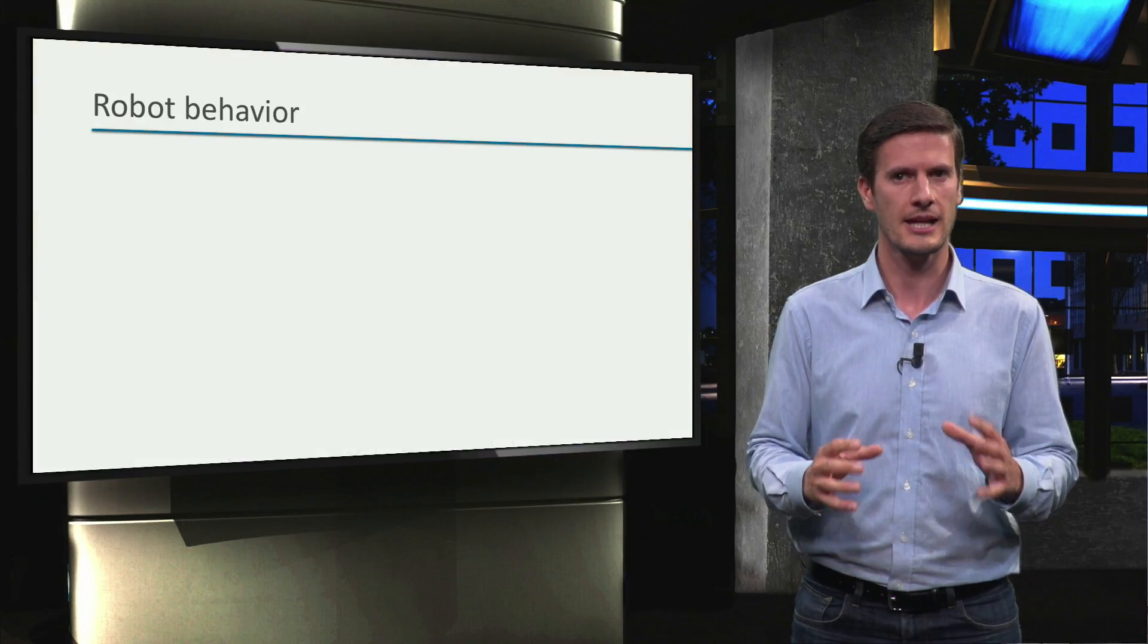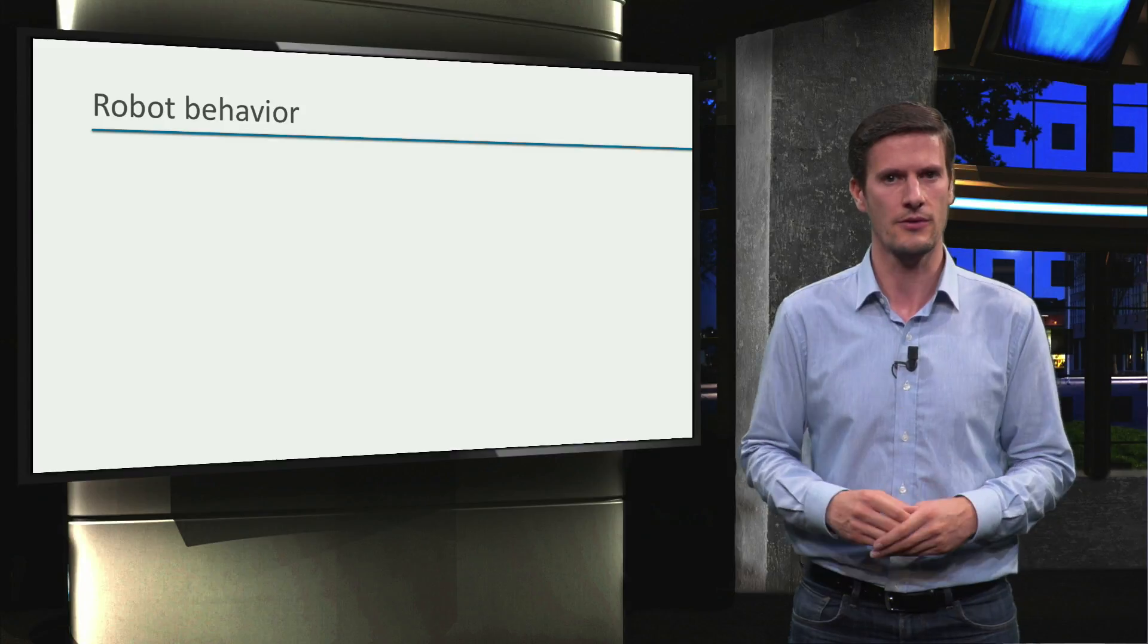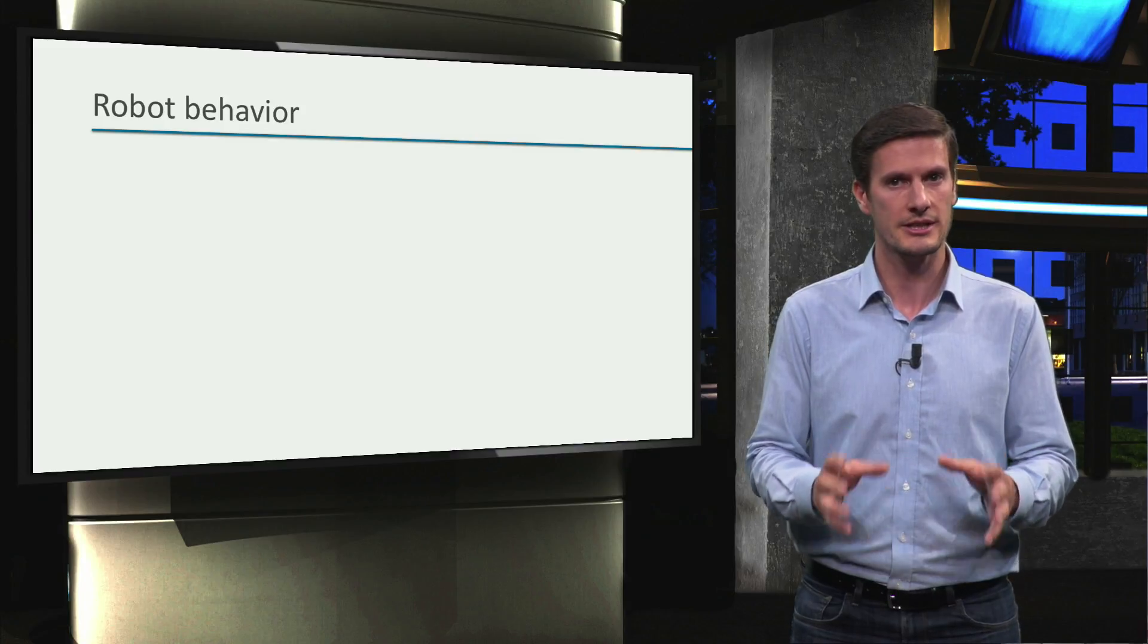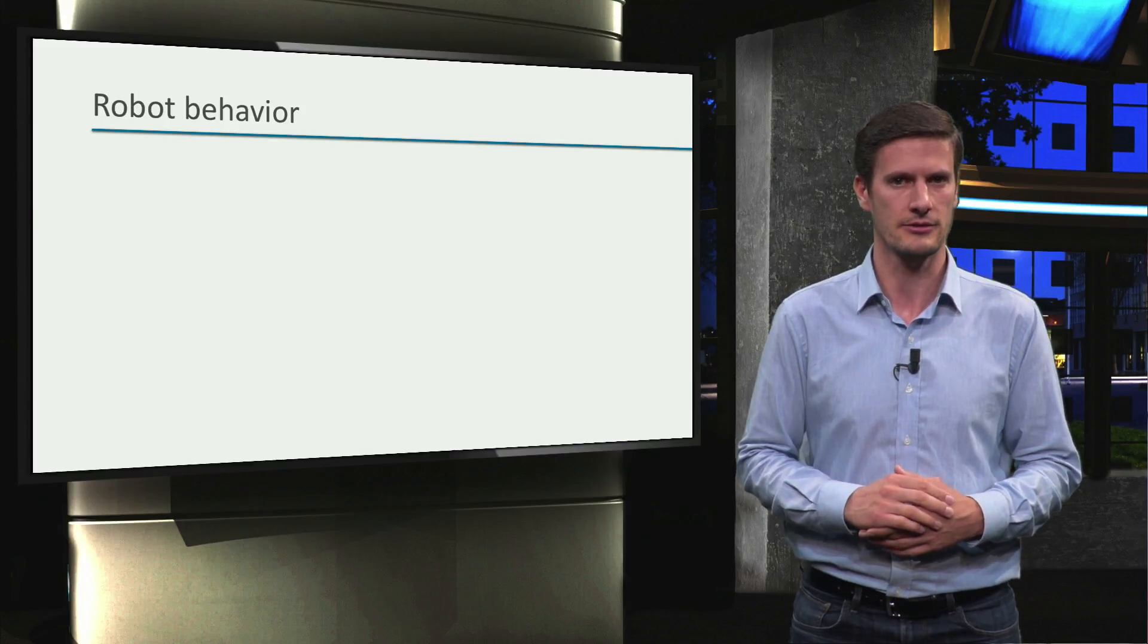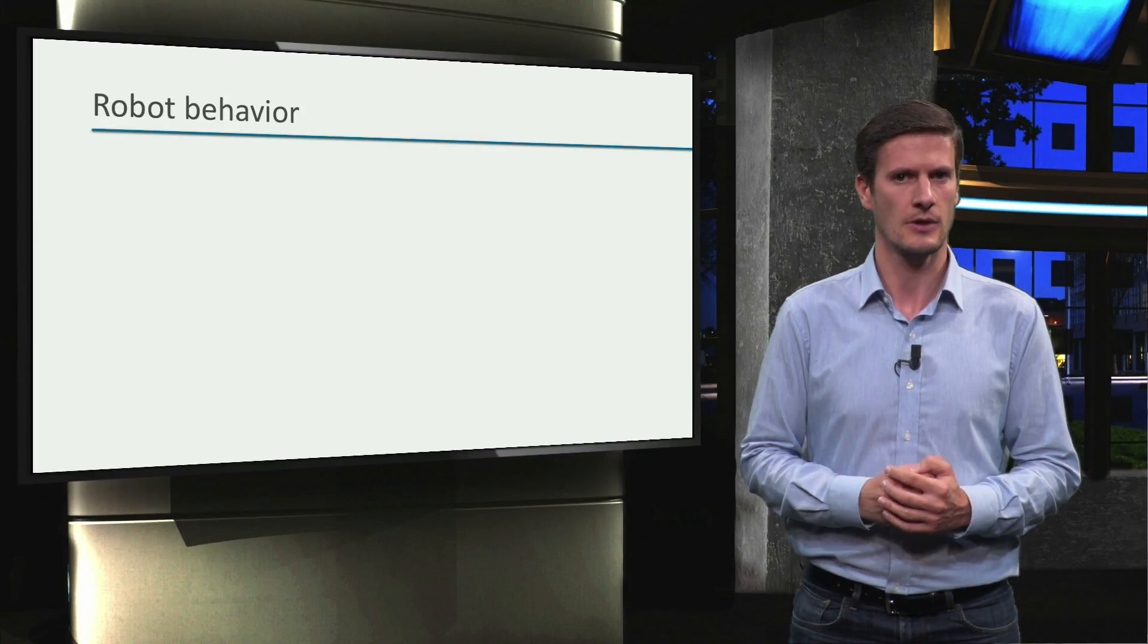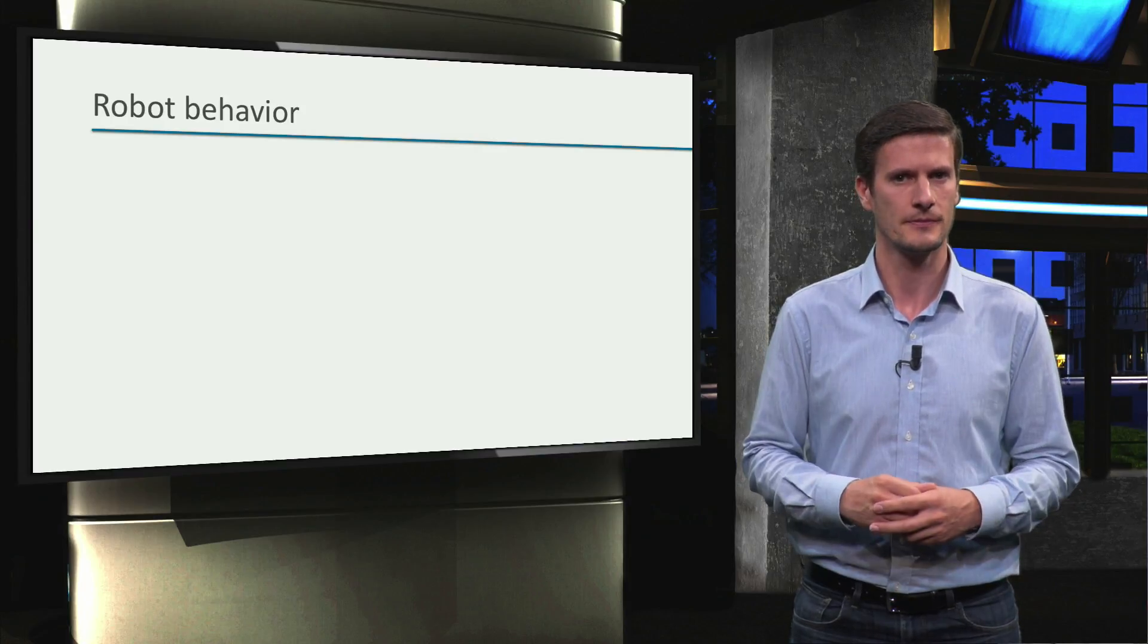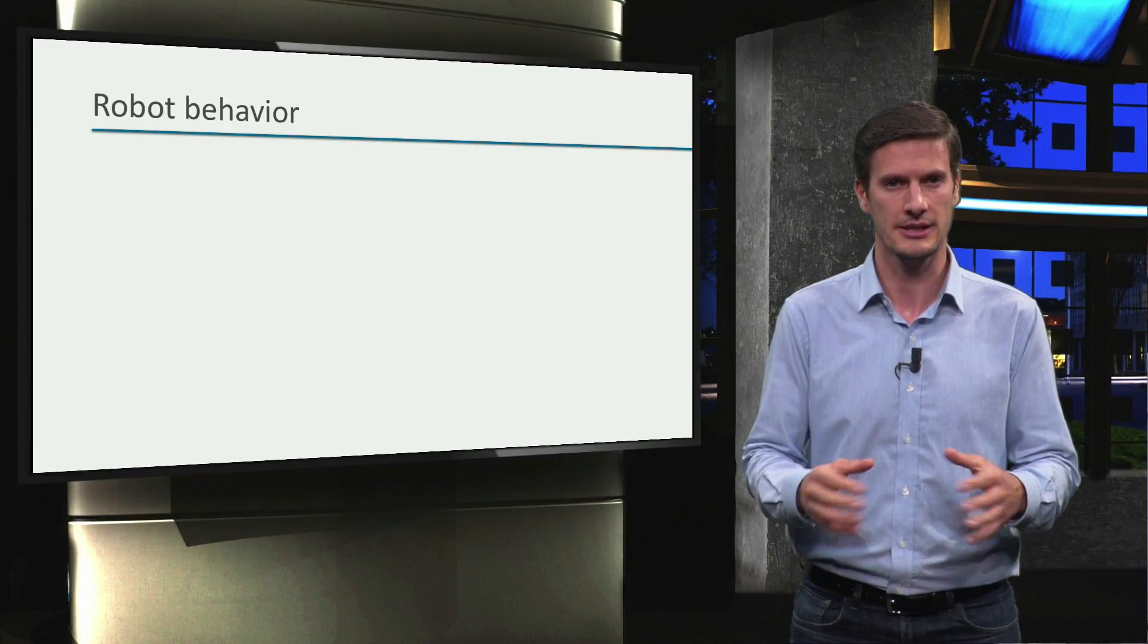Let's start by understanding better the idea of robot behavior and why we need behavior design to create our robot applications. Consider a picking application. What does the robot need to do? What is the desired behavior in this example?